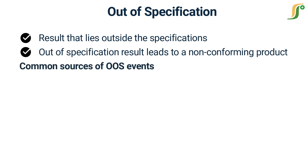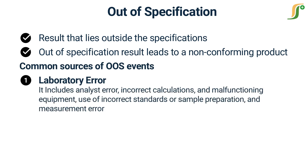Here are common sources of OOS events. The first source is laboratory error. Types of laboratory errors include analyst error, incorrect calculations, malfunctioning equipment, use of incorrect standards or sample preparation, and measurement error. Confirmation that this was the cause of the OOS condition would not constitute a product failure.